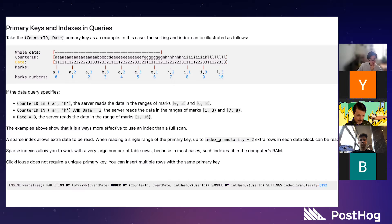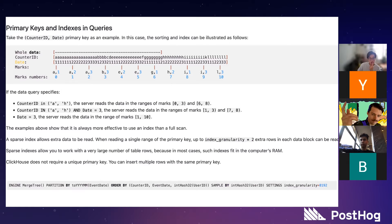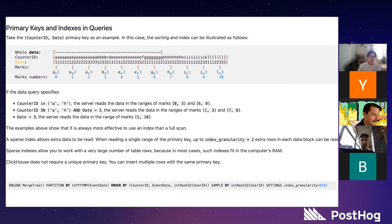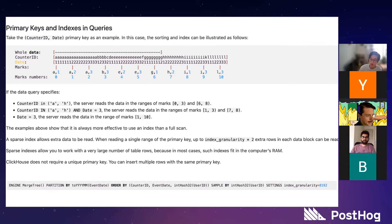Same thing with CounterID in A or H and Date equals 3 — it computes the intersection of those two ranges and you end up with marks 1, 2, 3, 7, and 8. The thing you're always trying to avoid is a full scan, which is what Postgres will do without an index. With ClickHouse, as long as you have a predicate on your sort keys, you're able to reduce the cardinality to some extent.